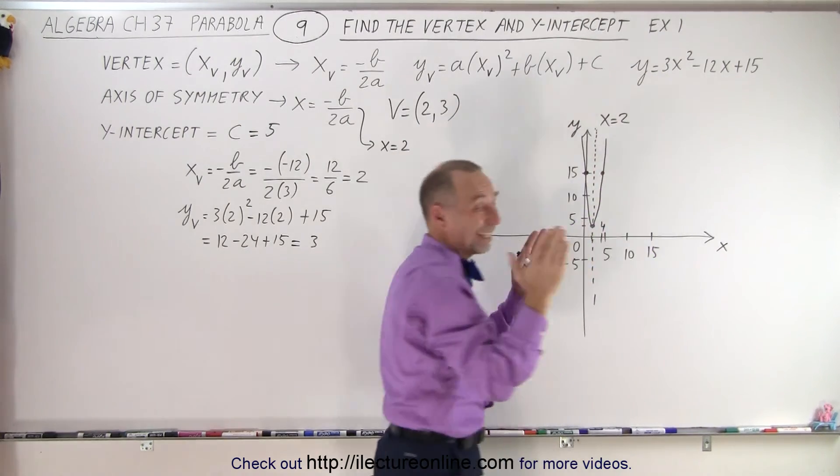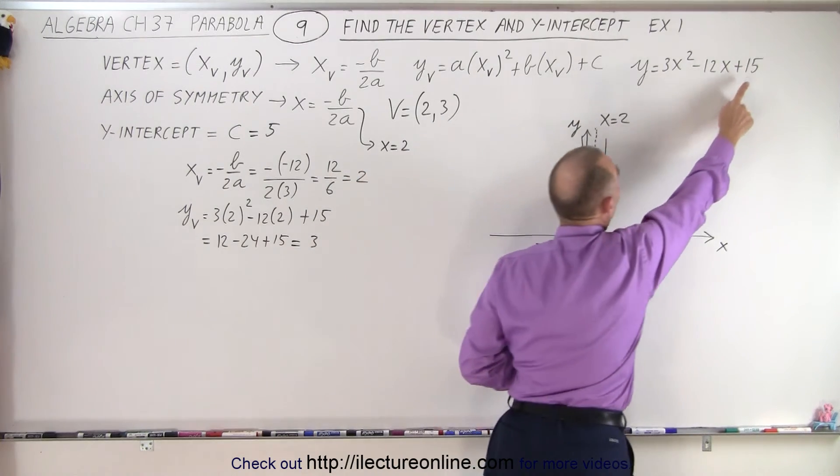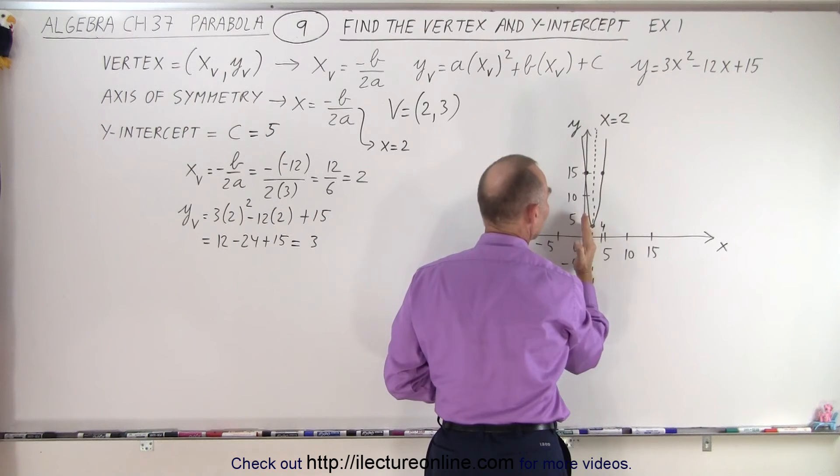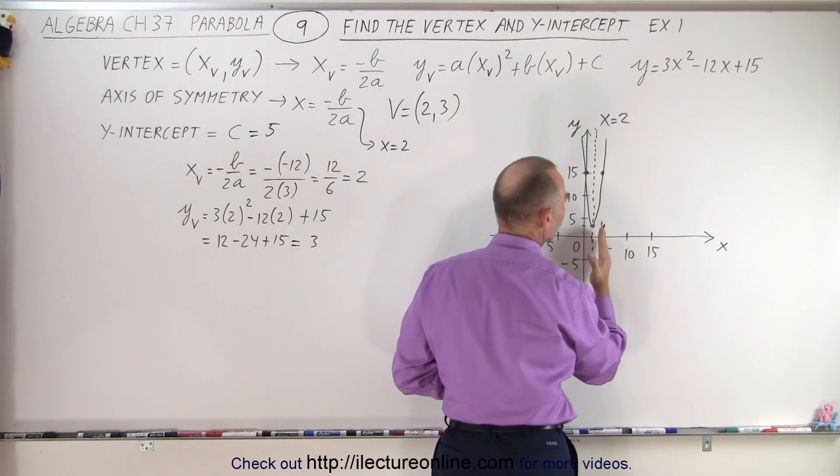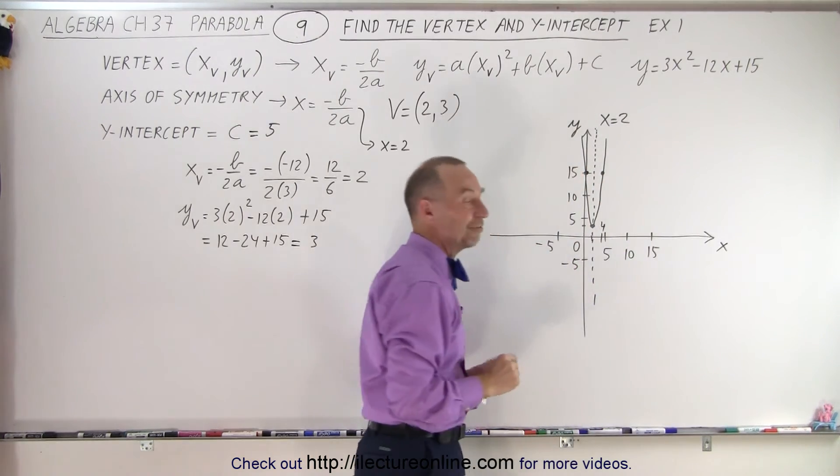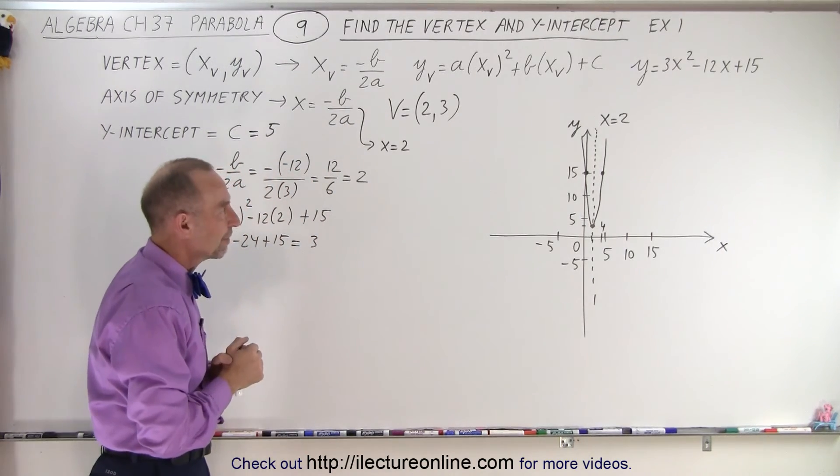We knew it would be skinny because there's a 3 in front of x². We found the y-intercept at y = 15, which is 2 units left of the axis of symmetry. So if we go 2 units to the right, from x = 2 to x = 4, we also have y = 15, because of perfect symmetry about the axis.